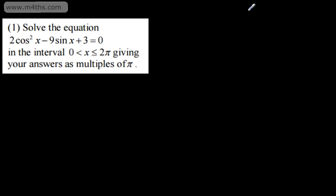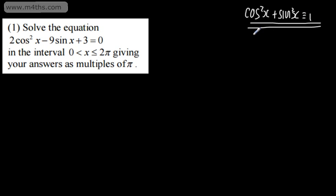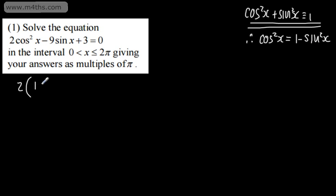I'm going to write to the examiner that cos²x + sin²x always equals 1 — that is one of our identities. Therefore, cos²x = 1 - sin²x. I'm now going to rewrite the equation as 2(1 - sin²x) - 9sinx + 3 = 0.